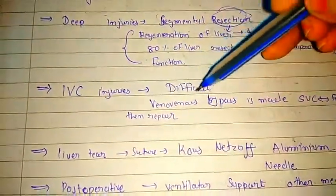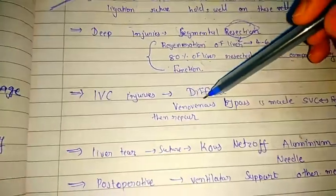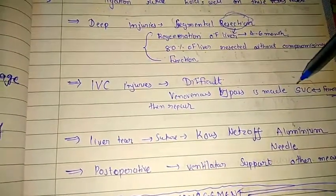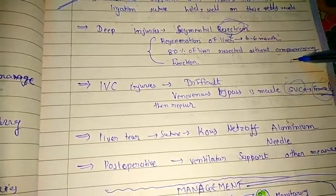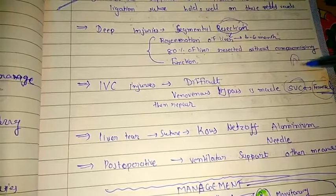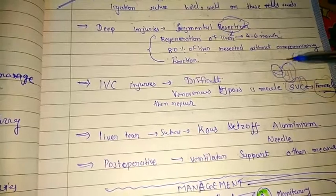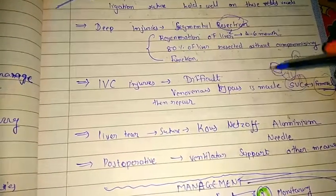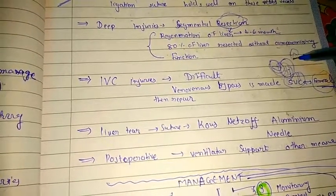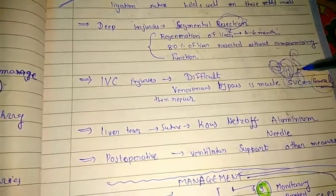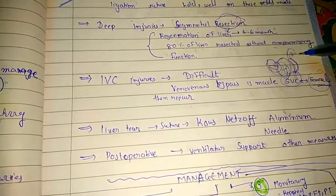If IVC (inferior vena cava) injury is present, which is very difficult to manage, an atriocaval bypass is made from the superior vena cava to the femoral vein. The inferior vena cava is bypassed first, and then the IVC injury is repaired.